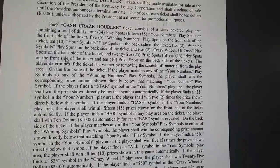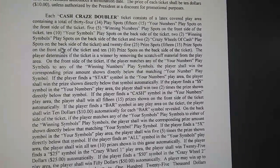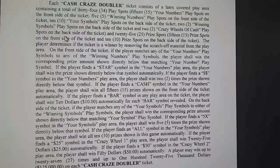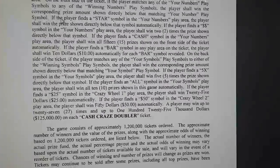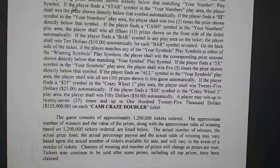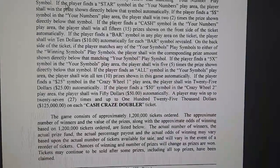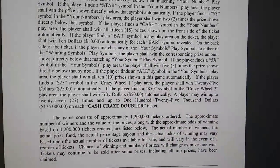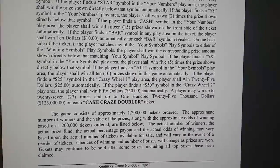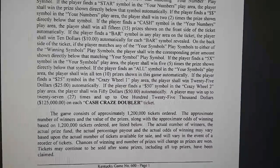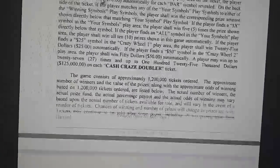As you see here in the middle, it tells you how the ticket is designed — how many spots, what the symbol means. And then in the second paragraph down here, it tells you how many tickets are printed approximately. There are 1.2 million tickets of this $10 ticket out there — it's actually closer to 1,222,000. They printed a little extra.